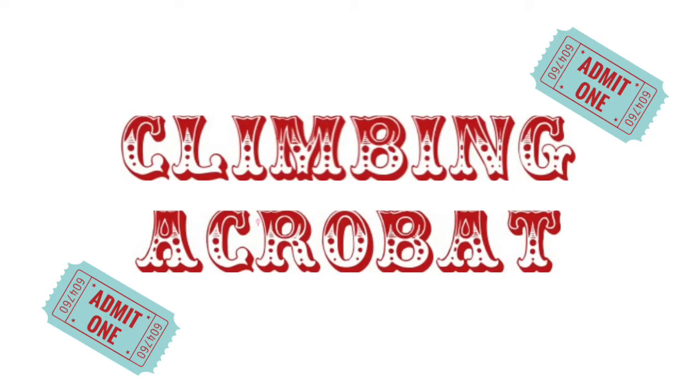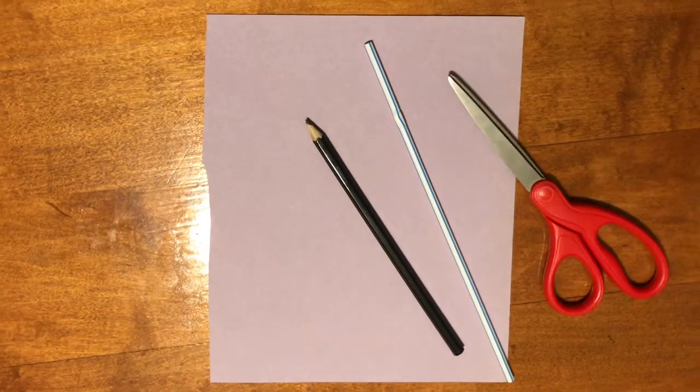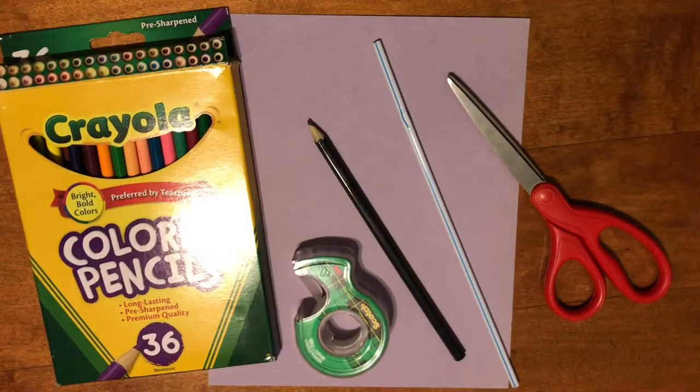First, let's make a climbing acrobat. You'll need a piece of paper, a pencil, a straw, some scissors and tape, something to color with, and some string.